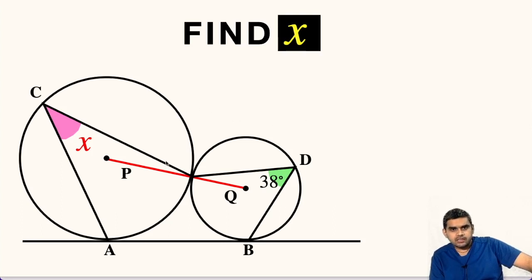In this question, two circles are shown. They are touching each other at a common point. They have centers at point P and Q respectively. Also, there is a common tangent line L which is tangent to these two circles at points A and B respectively. In the figure, this angle is 38 degrees. So, we have to find the value of angle C, that is x.